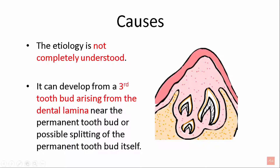In this picture, there are two tooth buds — one is the primary teeth, one is the permanent teeth, and the third tooth bud can be the supernumerary teeth.